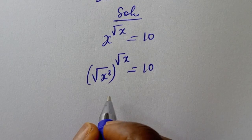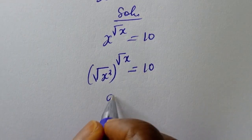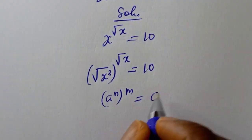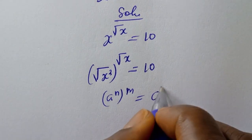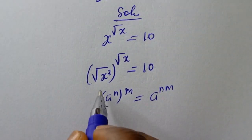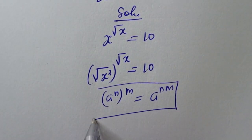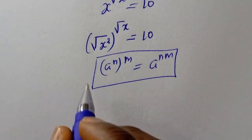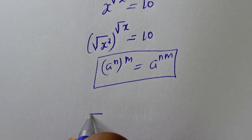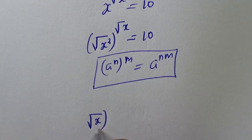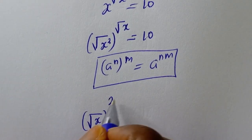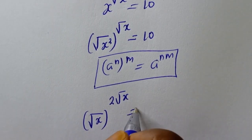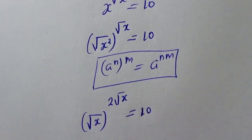Now if you have a raised to the power n, to the power of m, that is equal to a raised to the power nm. Then this can be written as square root of s to the power of 2 times square root of s, is equal to 10.